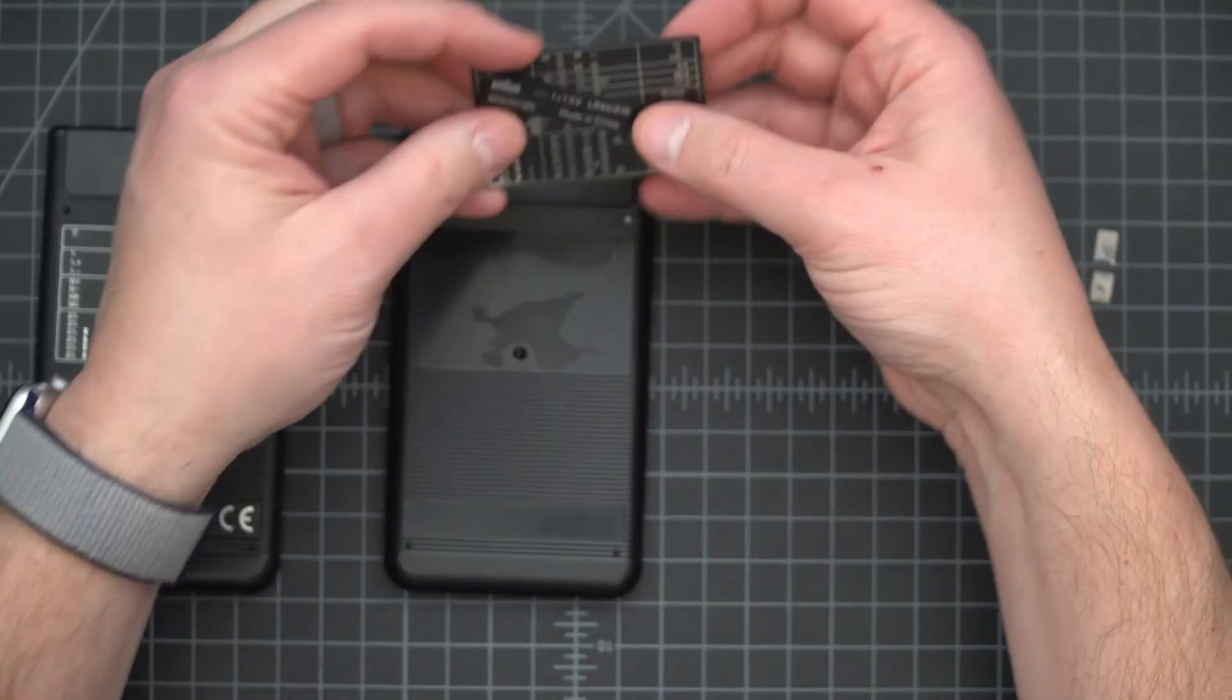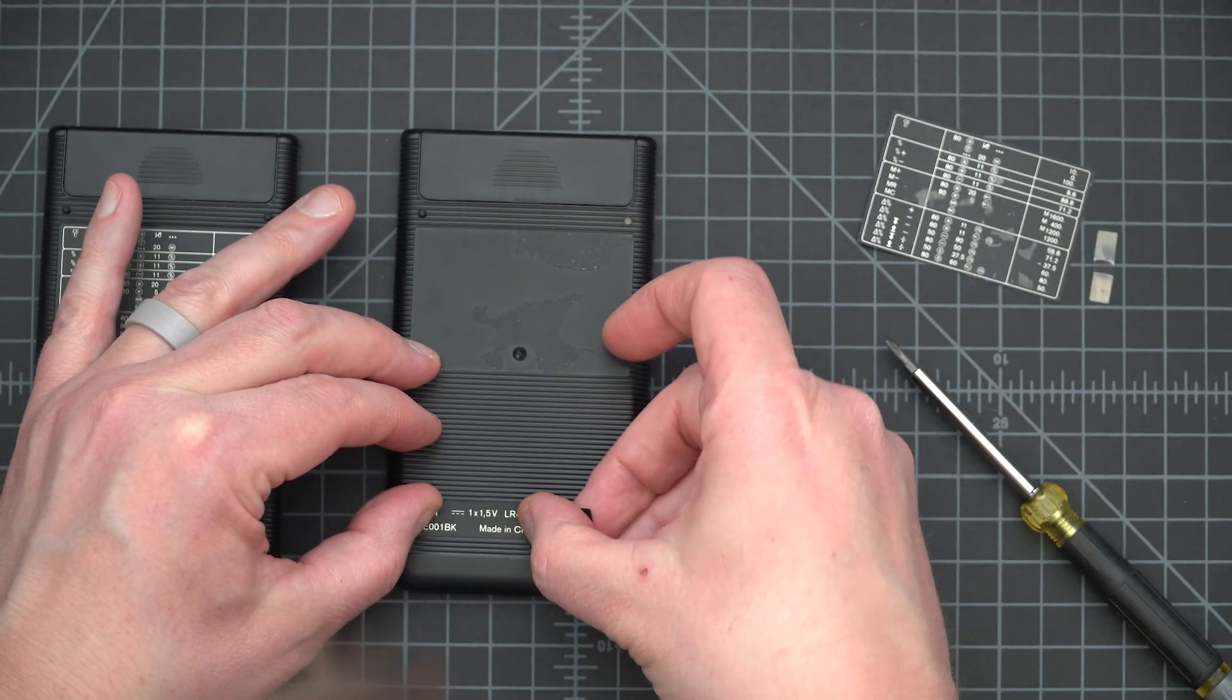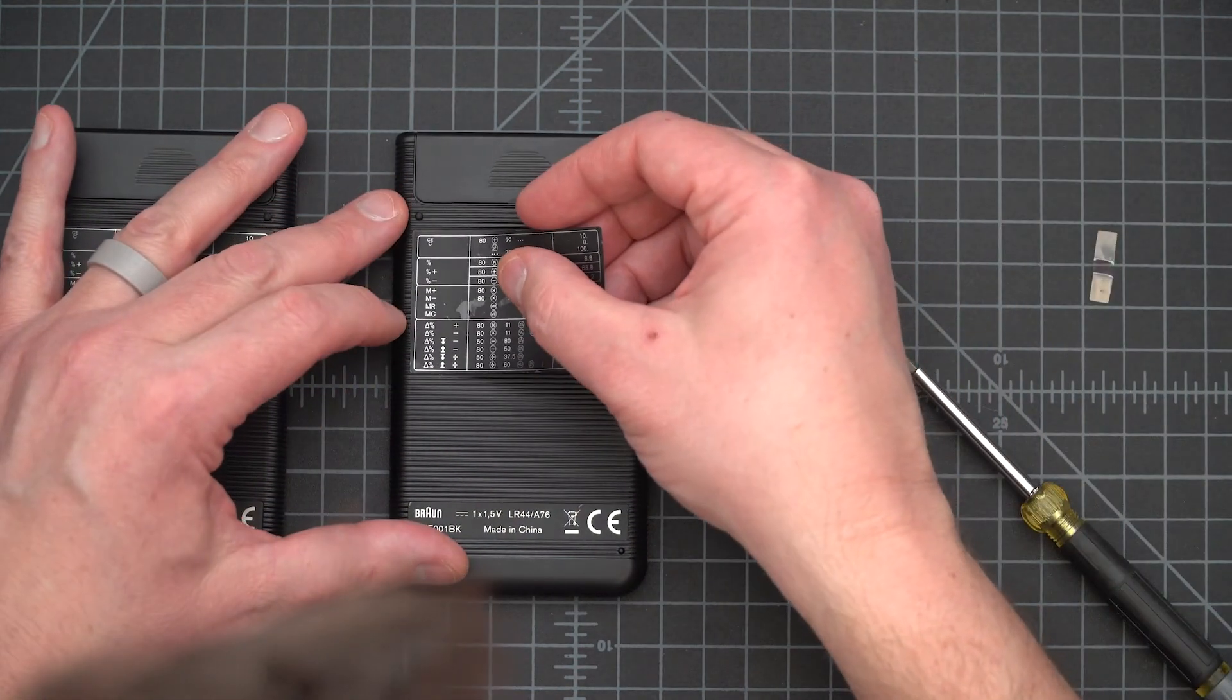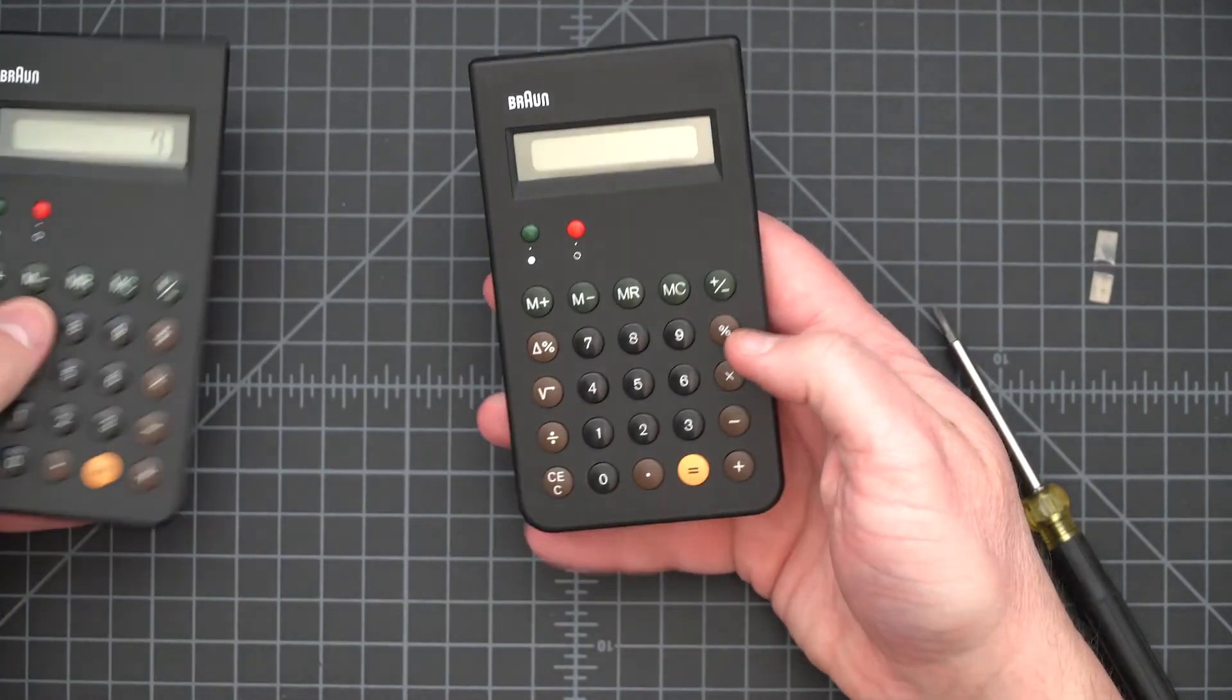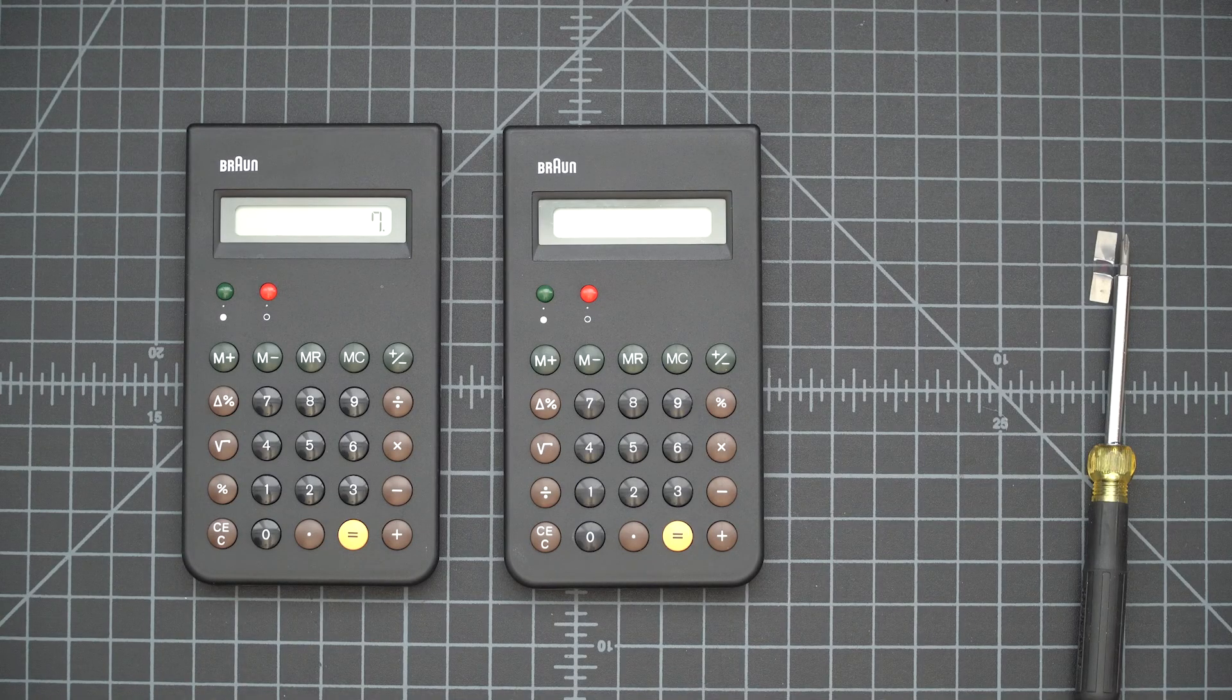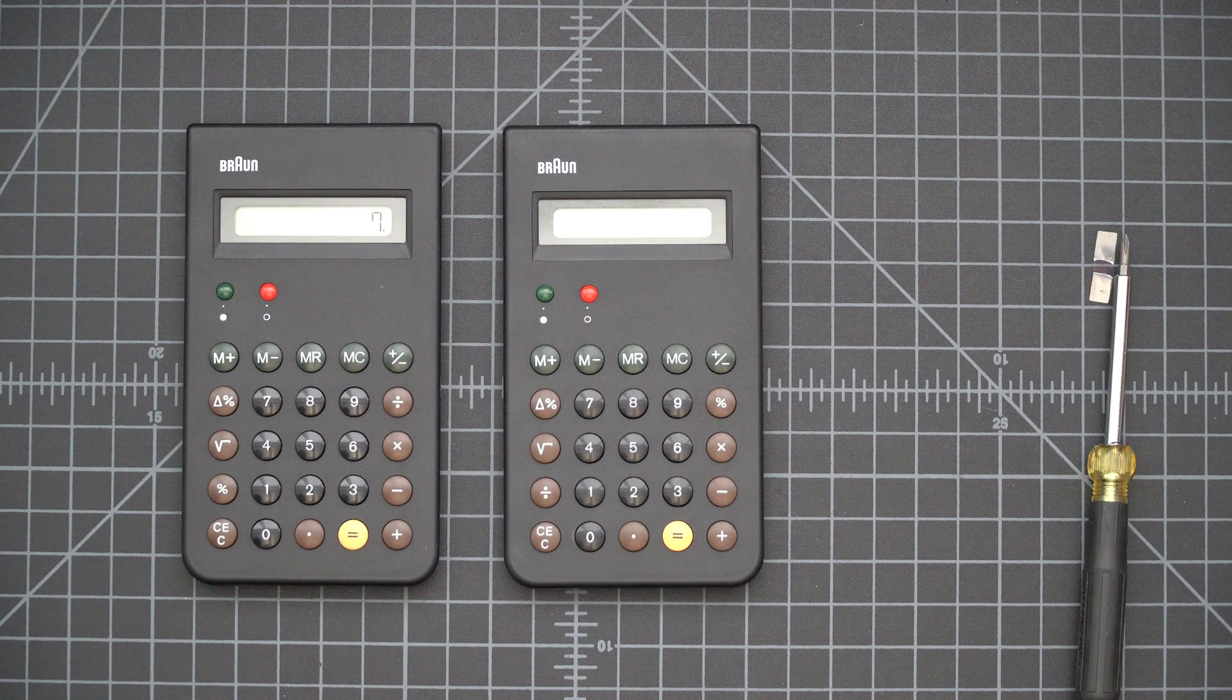And then the way that this would work is that this sticker will be placed in this recess, and this sticker will be placed in that recess. So there we have it. That's how the ET66 calculator goes together. I hope that was helpful and gave you some insight on how this thing works.